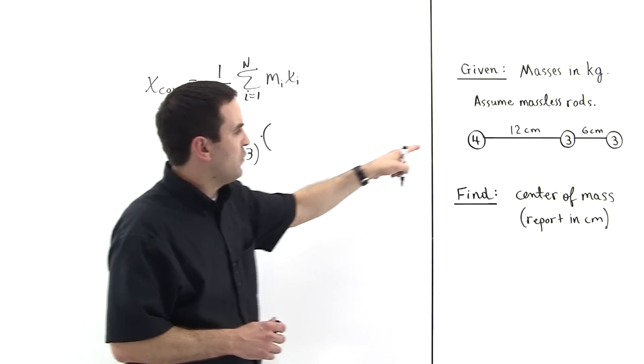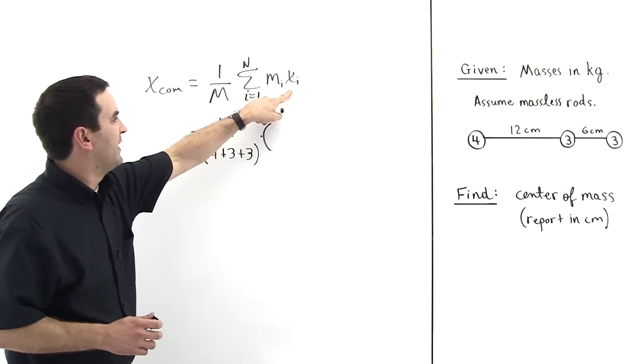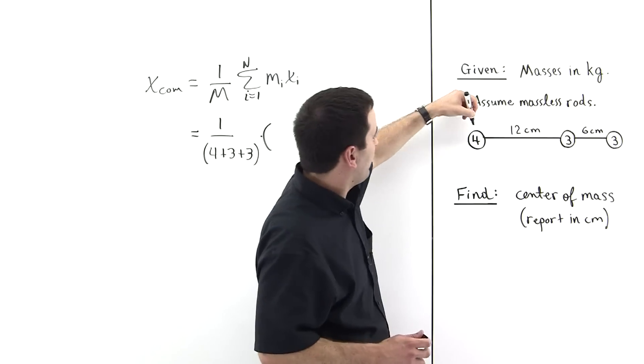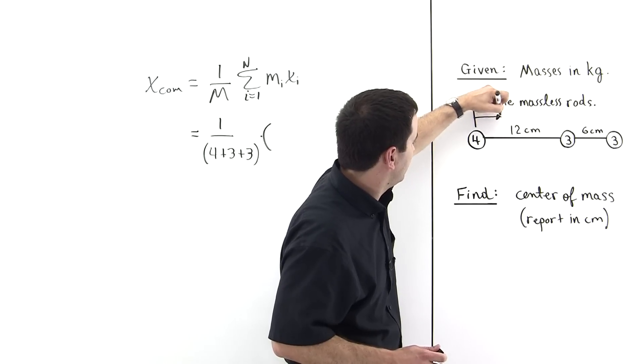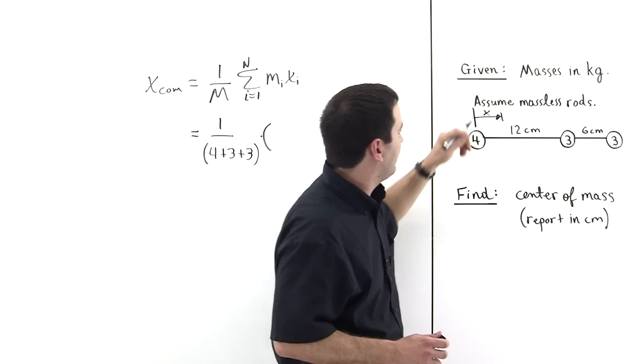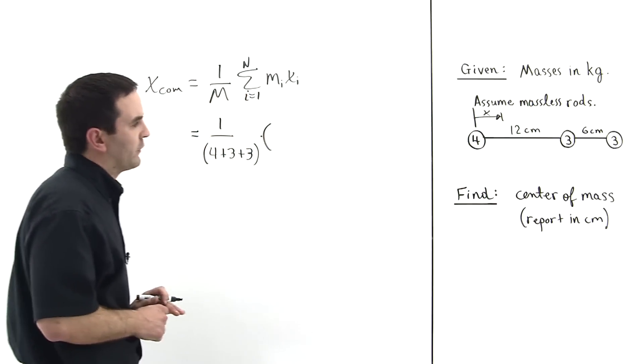The first one is four, but now we need to pick our origin because we're going to be multiplying times these x values. So let's pick our origin to be right here at the four kilogram mass. And that anything that way is a distance x away from it.